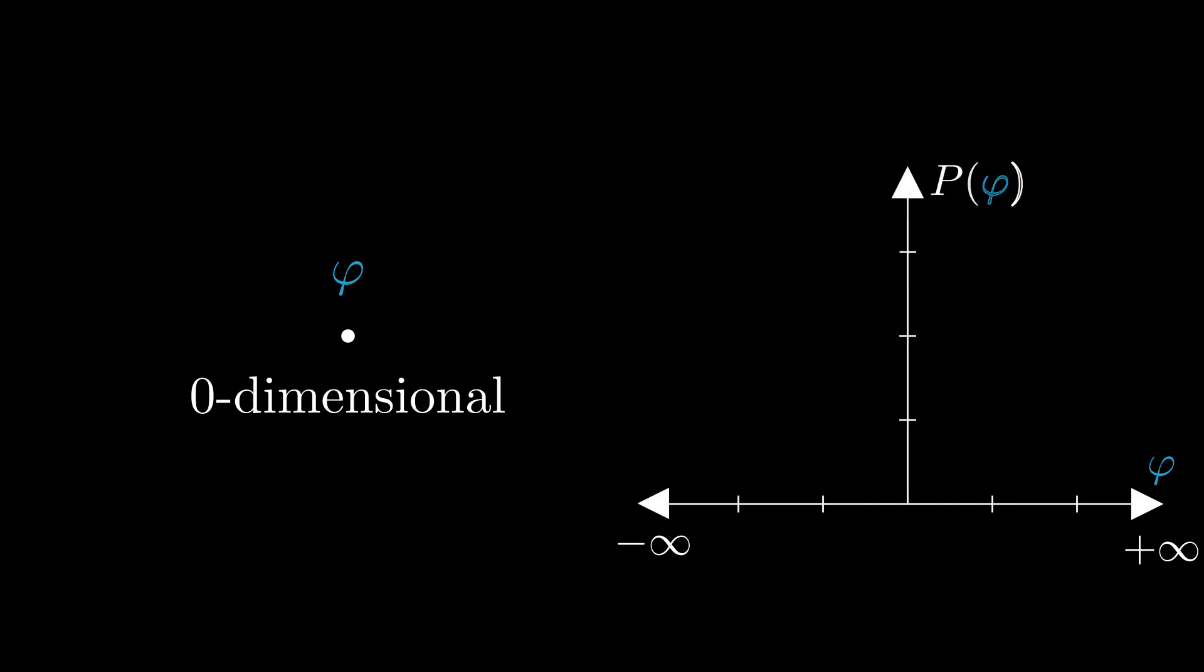As promised, we will start in zero dimensions, which is a space consisting of just one single point. We can assign a random real value to this point, which we call phi, which can take any value between minus and positive infinity. Because this is a random variable, the only thing we can assume about it is that it is described by some kind of probability density.